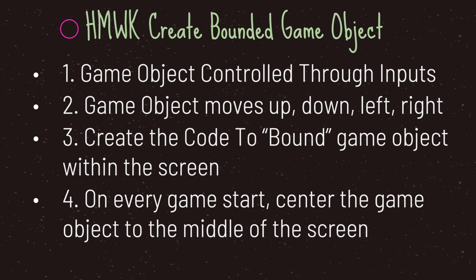Now let's look at the homework assignment. For this episode you're going to create a bounded game object, and there are four things you need to do. First, your game object needs to be controlled through player inputs — whether you use arrow keys or WASD, it needs to move in four different directions. Second, your game object needs to move up, down, left, and right. Third, you need to create the code to bound your game object within the game screen.